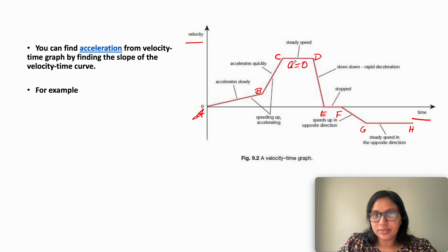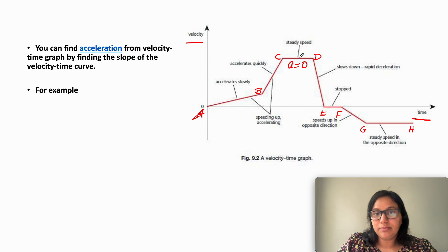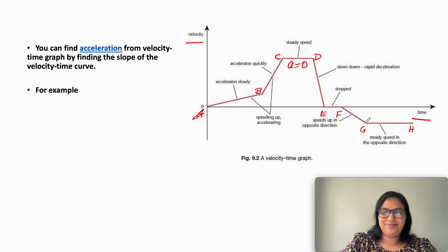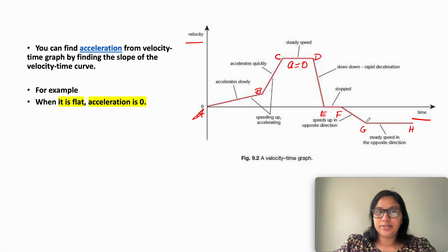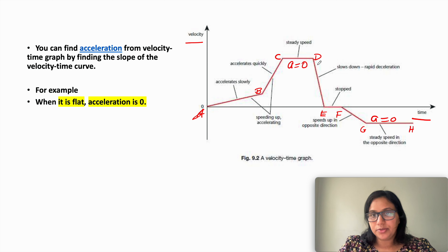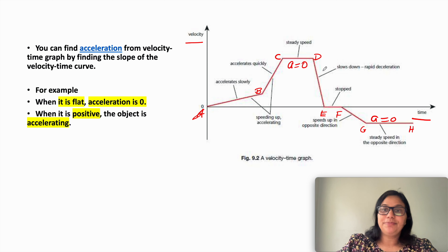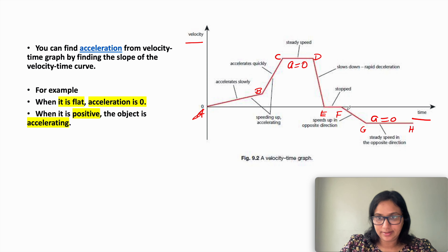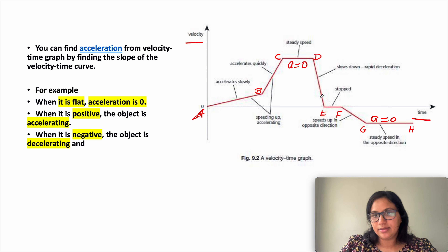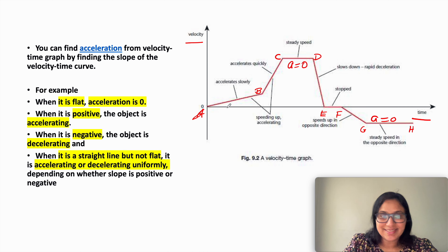From G to H the object moves at constant speed in the opposite direction. So sections C to D and G to H both show constant velocity, meaning acceleration is zero in both cases. When the graph is flat, acceleration is zero. When it is positive gradient, the object is accelerating. When it is negative gradient, the object is decelerating. When it is a straight line but not flat, the object is accelerating or decelerating uniformly.